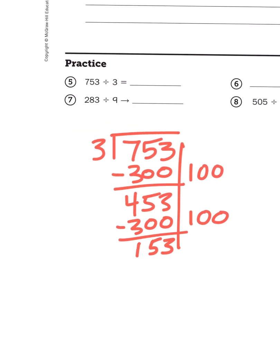153 has that 15 in the beginning of it, because what is 150 but 15 tens? So I could probably get at least 50 more 3's out of that, because 5 tens times 3 is going to give me 15 tens, or 150.